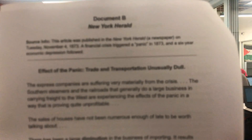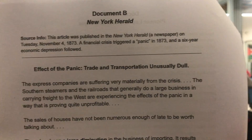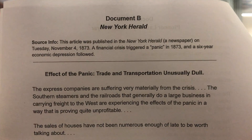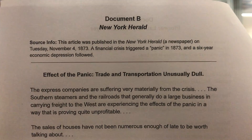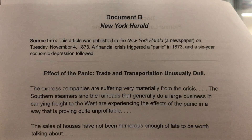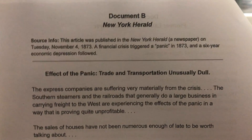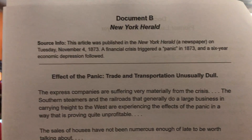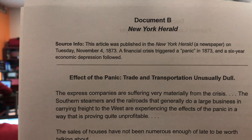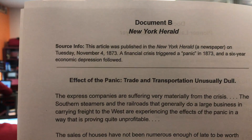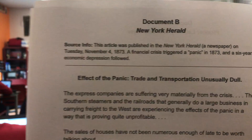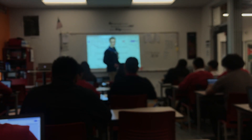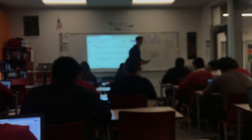So what are we going to say for our POV? Who is the author or source? It doesn't give us a name, so the best we can say is the New York Herald. This is an American newspaper. So let's write our answer here — Number 5 POV: New York Herald, an American newspaper.